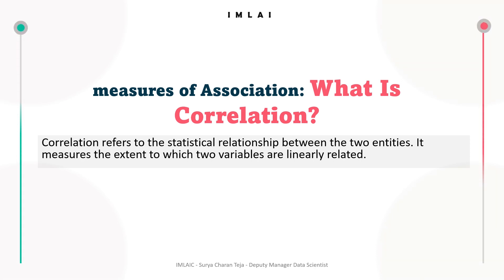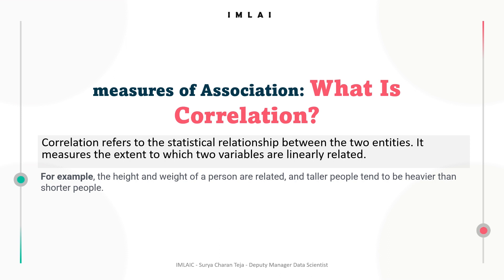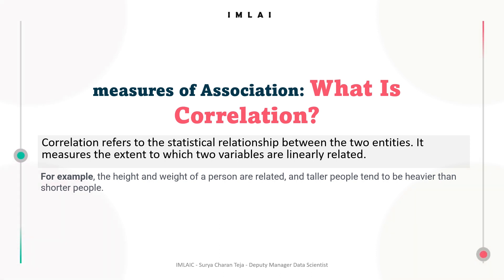Correlation measures the extent to which two variables are linearly related. For example, the height and weight of a person are related — taller people tend to be heavier than shorter people. You can apply correlation to a variety of data sets. In some cases you may be able to predict how things will relate, while in others the relation will come as a complete surprise.